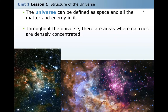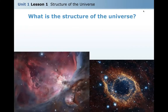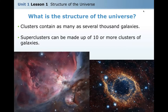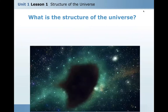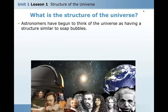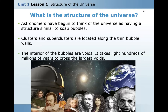Throughout the universe, there are areas where galaxies are densely concentrated, called clusters or superclusters. Clusters contain as many as several thousand galaxies. Superclusters can be made up of 10 or more clusters of galaxies. The universe also contains huge spherical areas where very little matter exists — these are called voids. Astronomers think of the universe as having a structure similar to soap bubbles, with clusters and superclusters along thin bubble walls, and voids in the interiors. It takes hundreds of millions of years for light to cross the largest voids.